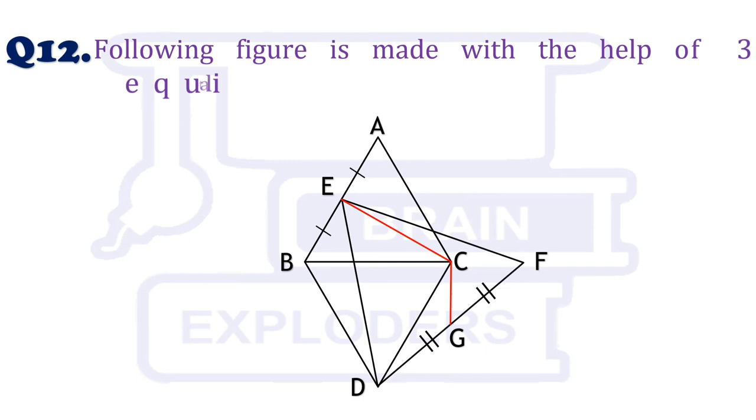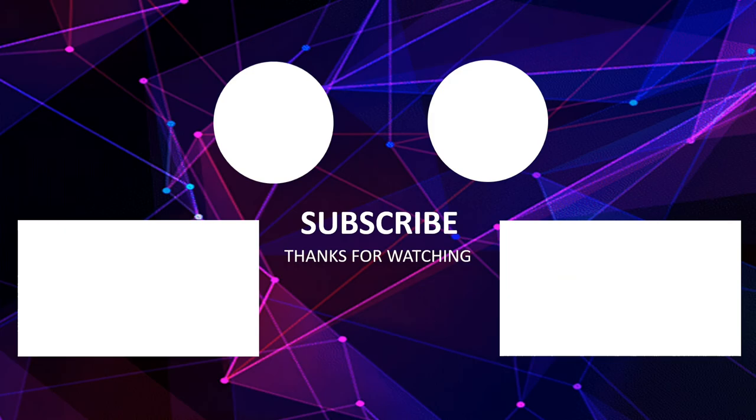Following figure is made with the help of three equilateral triangles. Find angle ECG. Try this question and send us your solution and if you have any question like this then please share with us. Don't forget to like and share our video and for more such videos subscribe to our channel Brain Explorers. Thanks for watching.